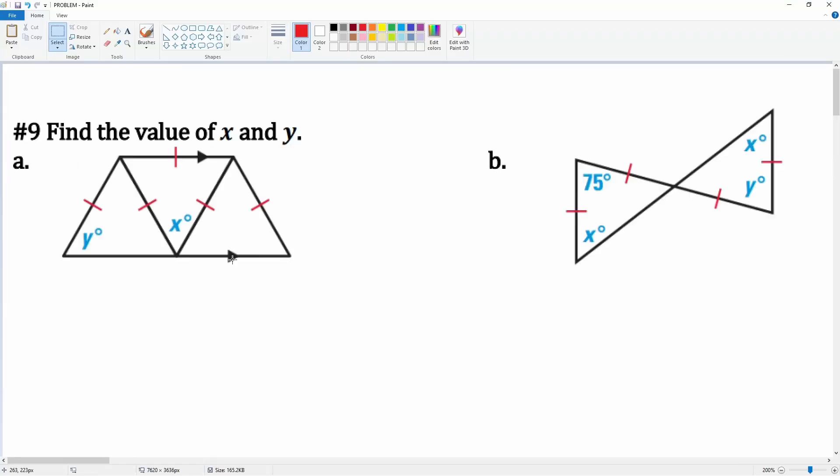Section 4 number 9, you're going to find the value of x and y. We know that the inside here is an equilateral triangle, so you should be aware that all angles here are going to be 60, 60, and 60.